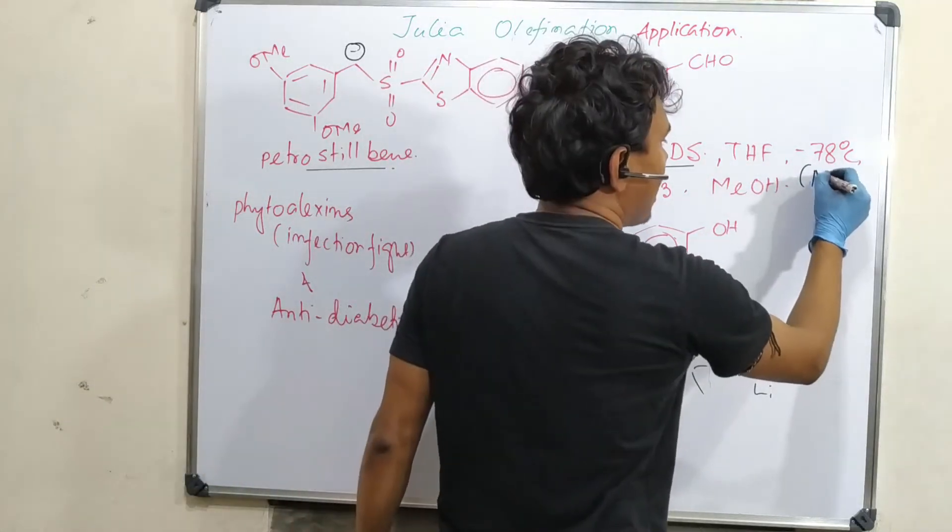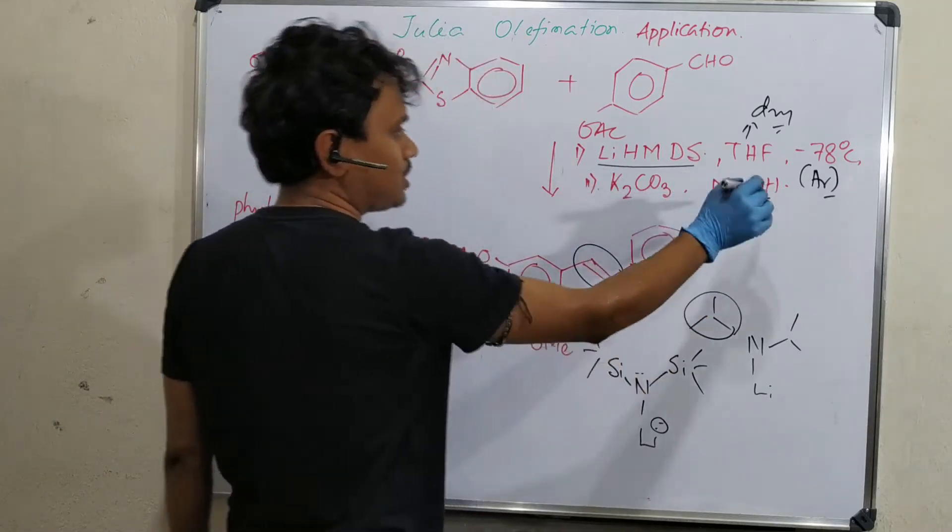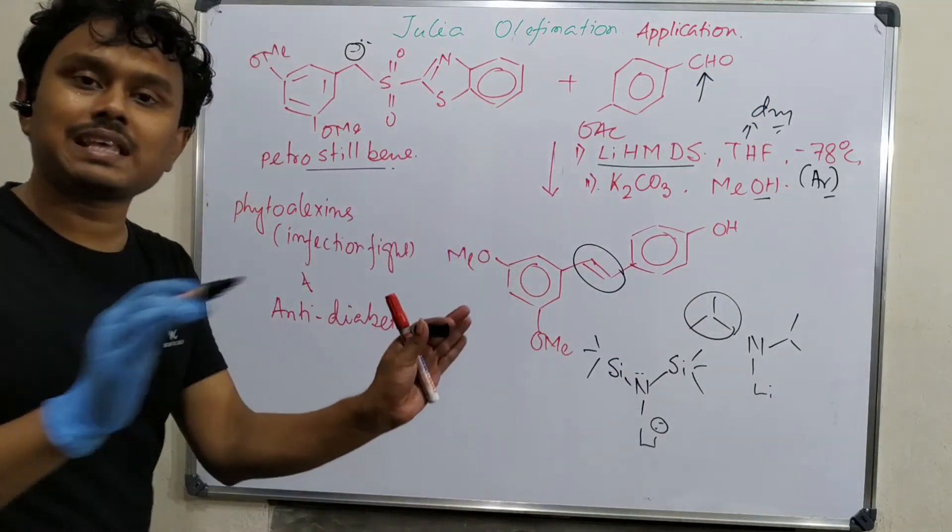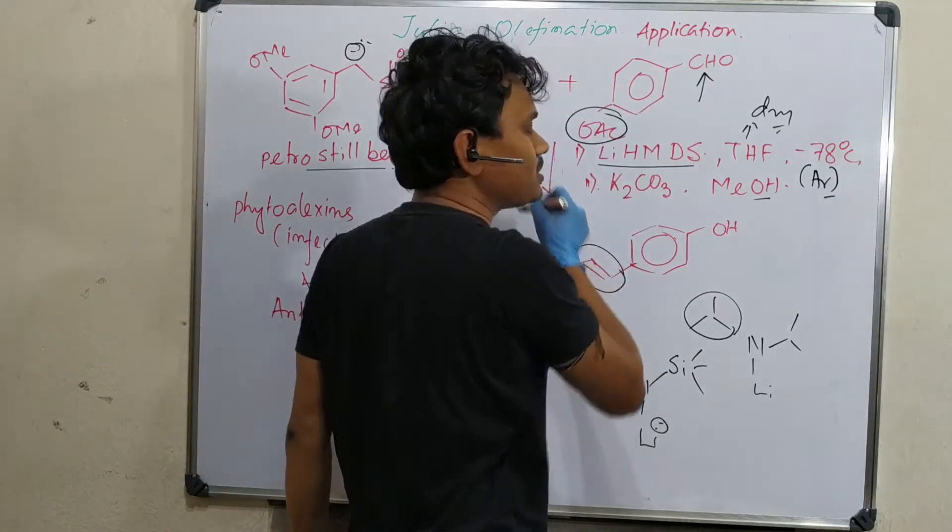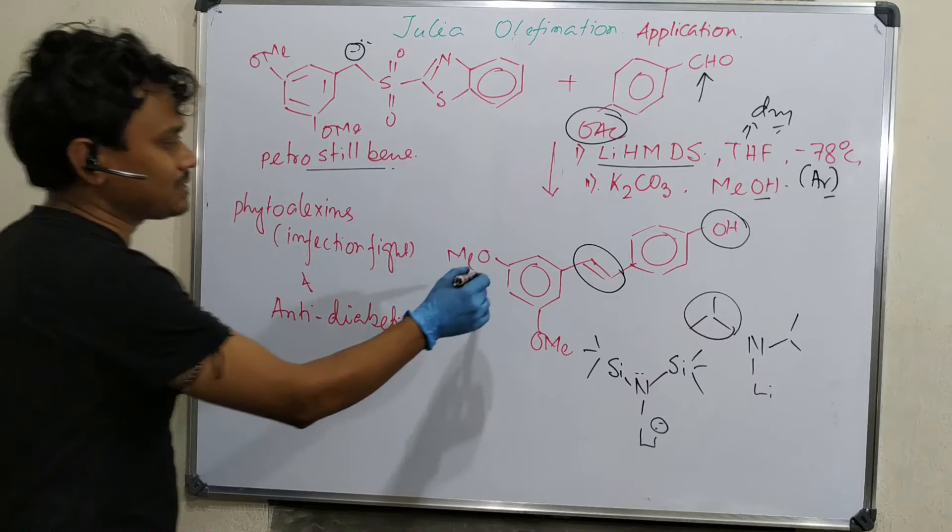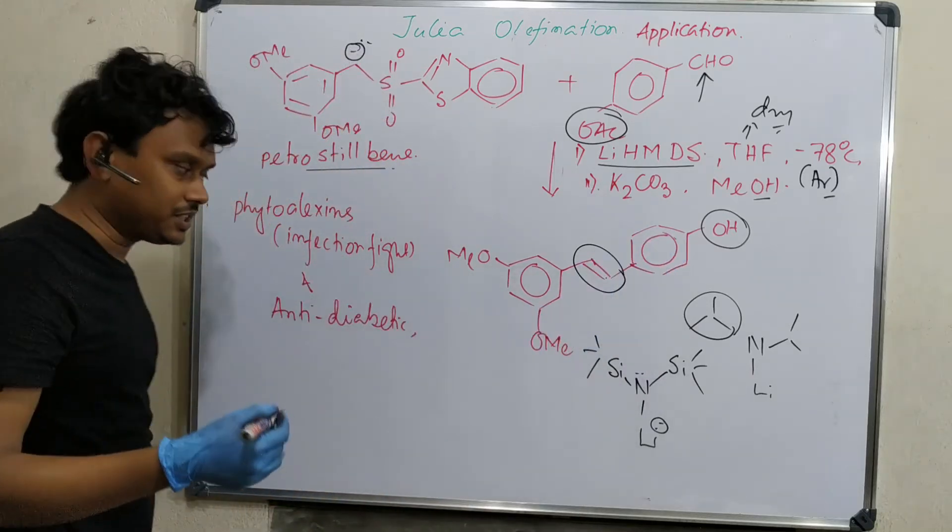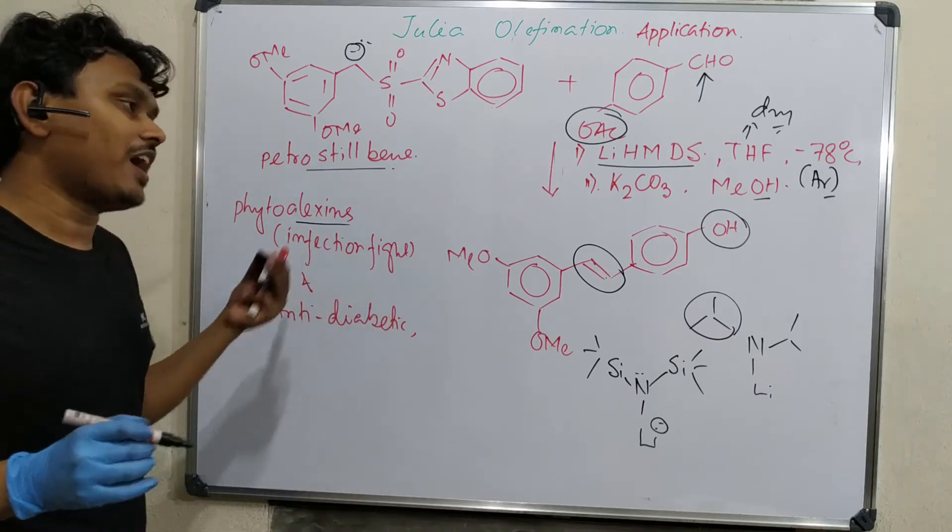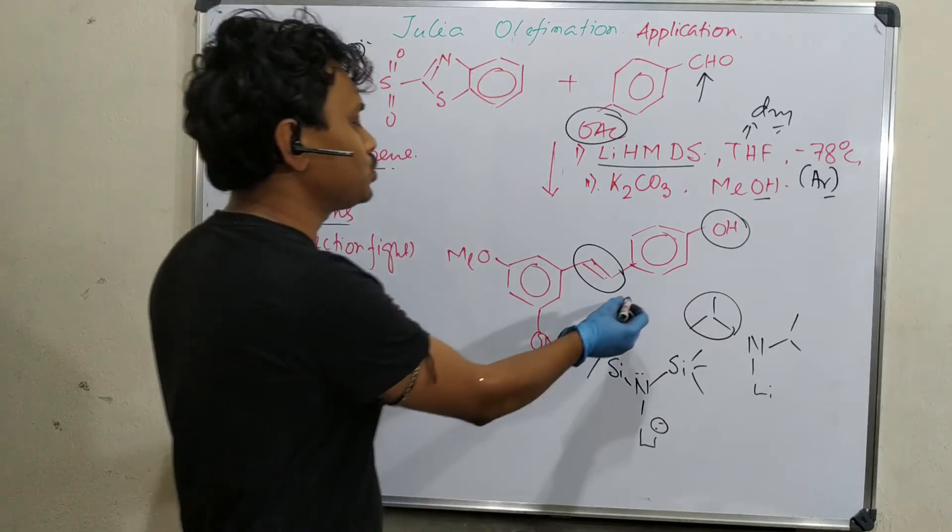Every reaction is done under argon environment. Every solvent and reactant must be dry, otherwise it will abstract proton from there. Second step is K2CO3 in ethanol. This abstracts the base and attacks this carbon. After that, as I explained everything, this procedure follows the same and ultimately produces this. This second step is hydrolysis of this OAc to produce OH. Such type of chemical has important properties. You can see lots of hydroxyl groups are there, so it could be used as a redox inhibitor type. It is used as phytoalexin, infection-fighting material in plants. Second, it could be used as anti-diabetic, but study is limited. In this way, Julia olefination produces some useful chemicals.